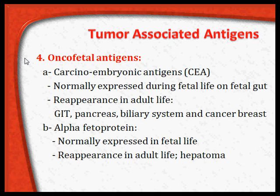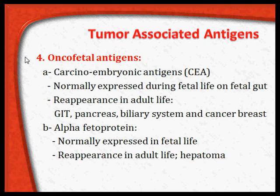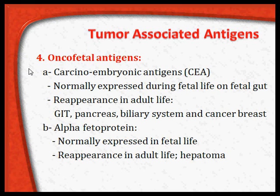Tumor-associated antigens can also be onco-fetal antigens. Onco-fetal antigens are present during fetal life, but once the child is born these antigens disappear and never reappear in adult life. However, if the person develops certain types of cancers, these fetal antigens reappear in the blood and are used as tumor markers. The best example is CEA — carcinoembryonic antigen.